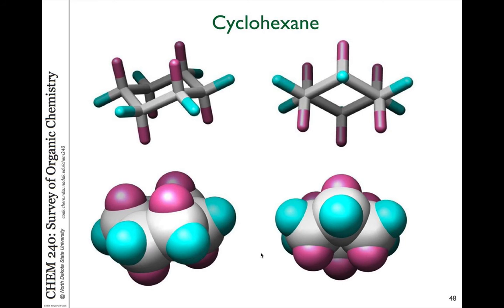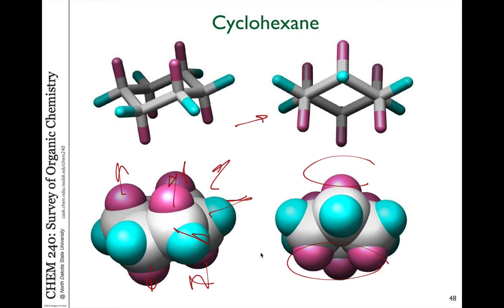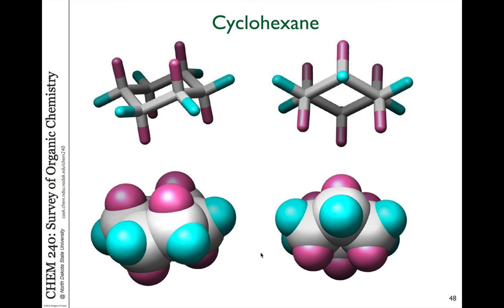One thing you can notice from this chair structure is that some of the hydrogens — the pink ones — are pointing straight up or straight down. Some of the hydrogens listed in blue are pointing out away from the ring. We refer to the ones pointing out as equatorial hydrogens, and the pink ones that are straight up and down as axial. Those are in slightly different steric environments, and we'll see a little bit later how those steric environments change when you have axial versus equatorial positions.